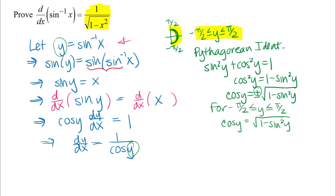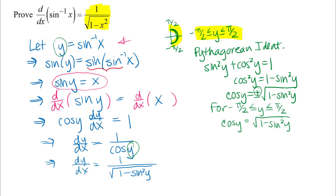Going back to what I was working on, I'll replace the denominator using the Pythagorean identity result: dy/dx = 1 over the square root of 1 minus sin²(y). That looks a little more complicated, but at least I have the root in the denominator I was after. From the earlier step I have x equals sine of y, so I can replace sine of y with x. There we get dy/dx equals 1 over the square root of 1 minus x squared. We've done our proof — QED.